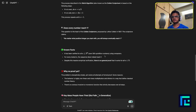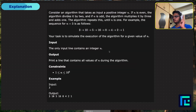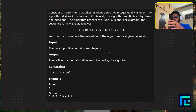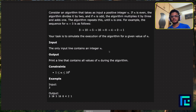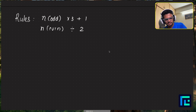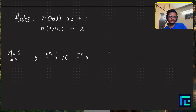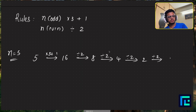Let's go to the drawing board to understand this problem. I'll do a dry run on an example and then show that 2^68 is greater than or equal to 10^6. Take n equals 5: 5 is odd, so multiply by 3 and add 1 — it becomes 16. 16 is even, divide by 2: 8. 8 is even, divide by 2: 4. 4 is even, divide by 2: 2. 2 is even, divide by 2: 1. Stop there.